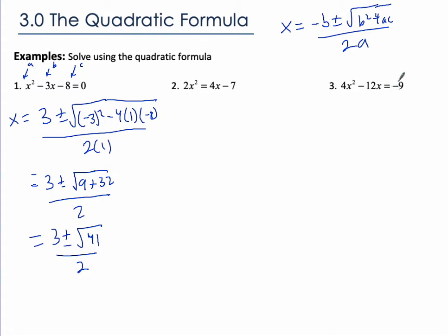Now, to use the quadratic formula, we need 0 on one side, so that's what you need to do first sometimes. So if we use the quadratic formula, you've got x equals negative b, b is 12.